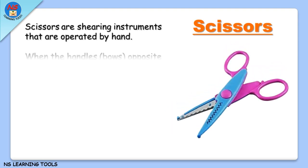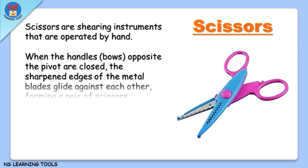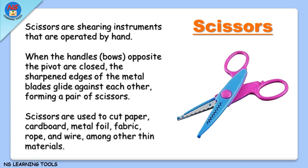Scissors. Scissors are shearing instruments operated by hand. When the handles are closed, the sharpened edges of the metal blades glide against each other. Scissors are used to cut paper, cardboard, metal foil, fabric, rope, and wire, among other thin materials.